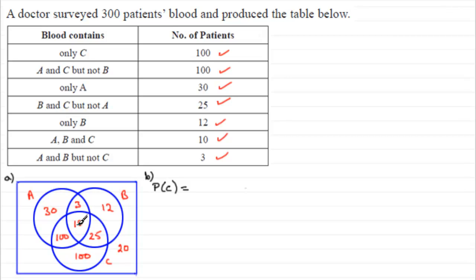So how many patients have C in their blood? Not C only, but they can have other substances as long as they've got C in the blood. Well, that's going to be the 100, the 10, the 25 and the 100. So if you were to write these down.